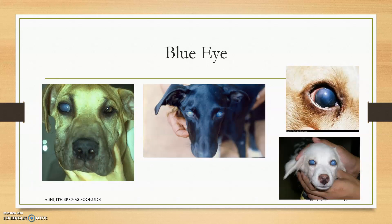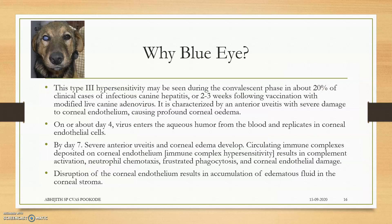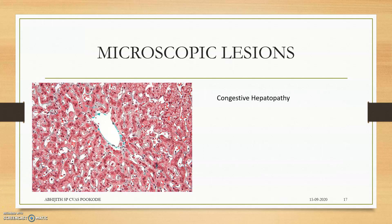Now the Blue Eye complex: it is a Type 3 hypersensitivity reaction, characterized by anterior uveitis with severe damage to the corneal endothelium, causing corneal edema. By day seven, severe anterior uveitis and corneal edema develop due to immune complex hypersensitivity. The circulating immune complexes — antigen-antibody complexes — deposit on the corneal endothelium, disrupting it and resulting in accumulation of edema fluid in the corneal stroma.